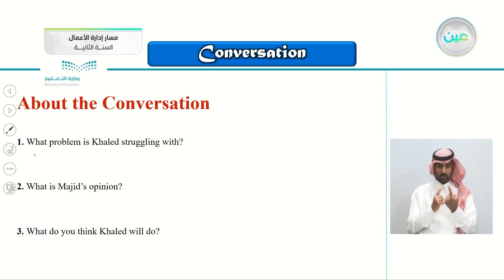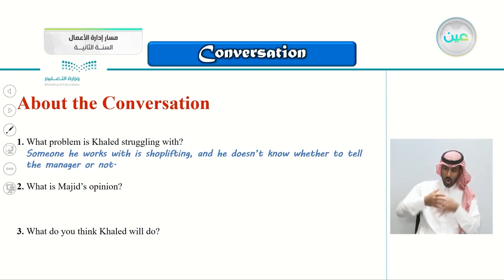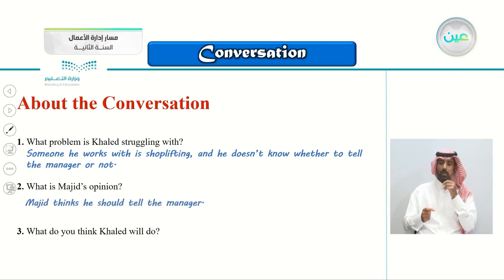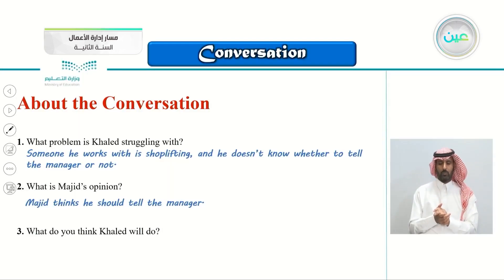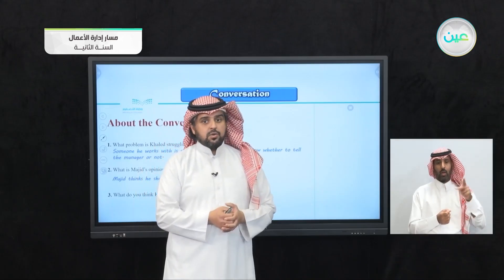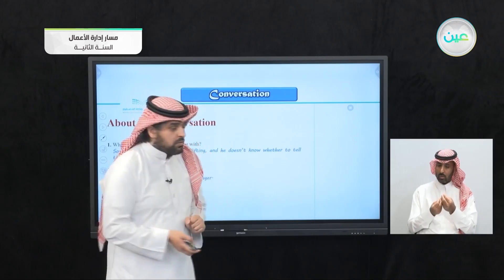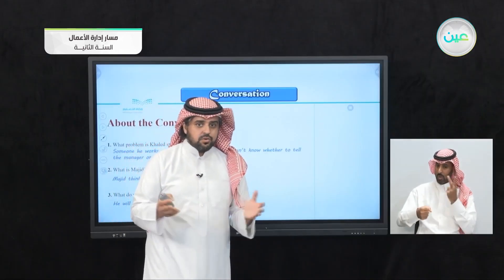About the conversation, we have three questions. What problem is Khaled struggling with? Someone he works with is shoplifting, and he doesn't know whether to tell the manager or not. What is Majid's opinion? Majid thinks he should tell the manager — blow the whistle on him, tell the manager that his co-worker is stealing, or Khaled would be in trouble. What do you think Khaled will do? I think he will tell the manager because his co-worker has stolen twice — that's more than enough.